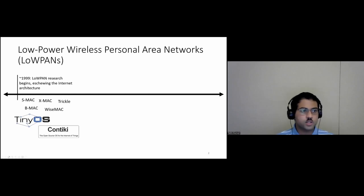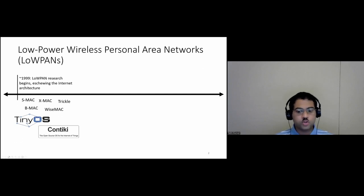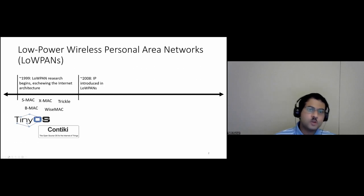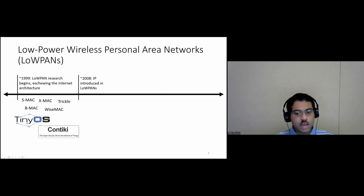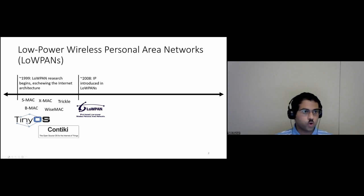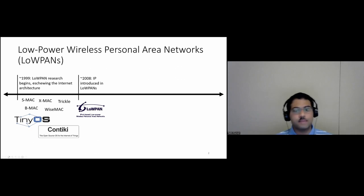Research on LOWPANs began in the late 1990s and early 2000s. At this point, researchers deliberately cast away the internet architecture based on the idea that LOWPANs might be too different from regular networks for it to apply. This allowed early systems like SMAC, BMAC, TinyOS, and Contiki — all very widely influential — to directly tackle the challenges of LOWPANs without being constrained by having to fit into an architecture.